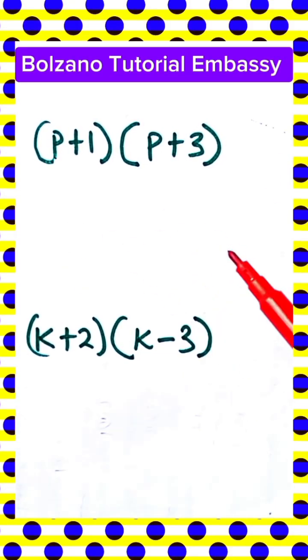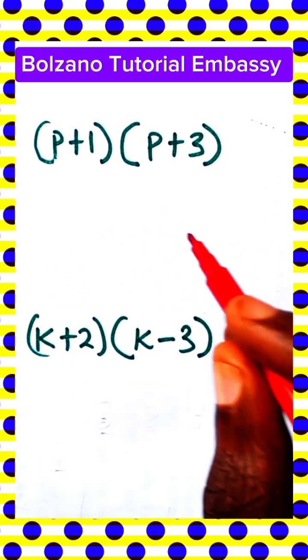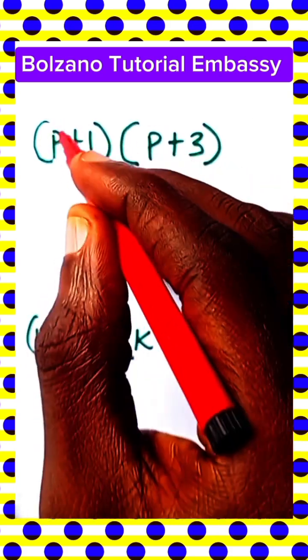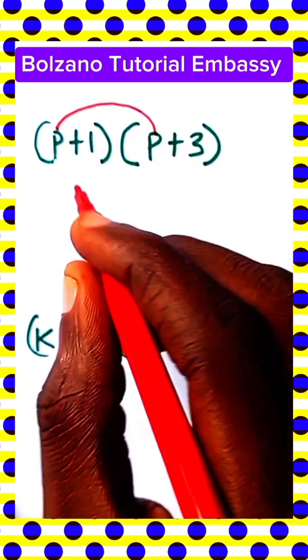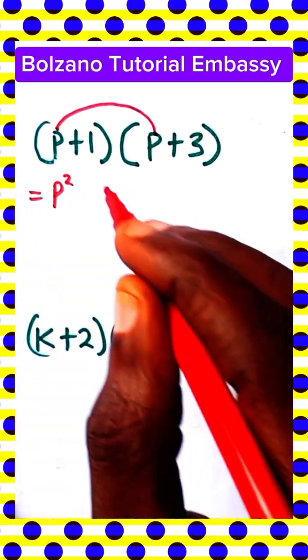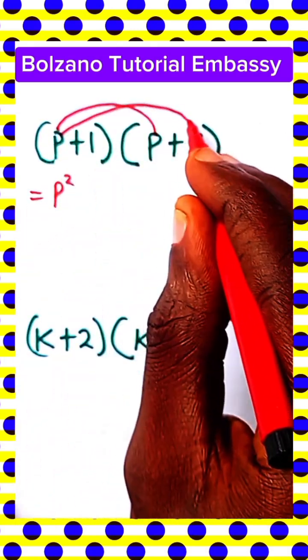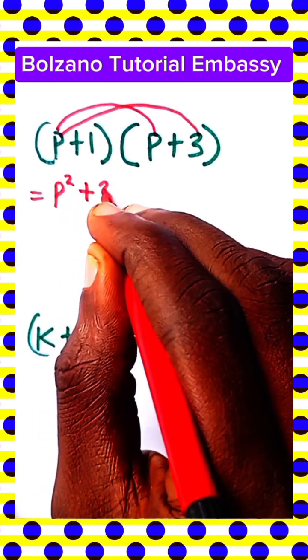Let's quickly perform this multiplication by expanding the brackets. So here P times P is P squared, P times 3 that is plus 3P.